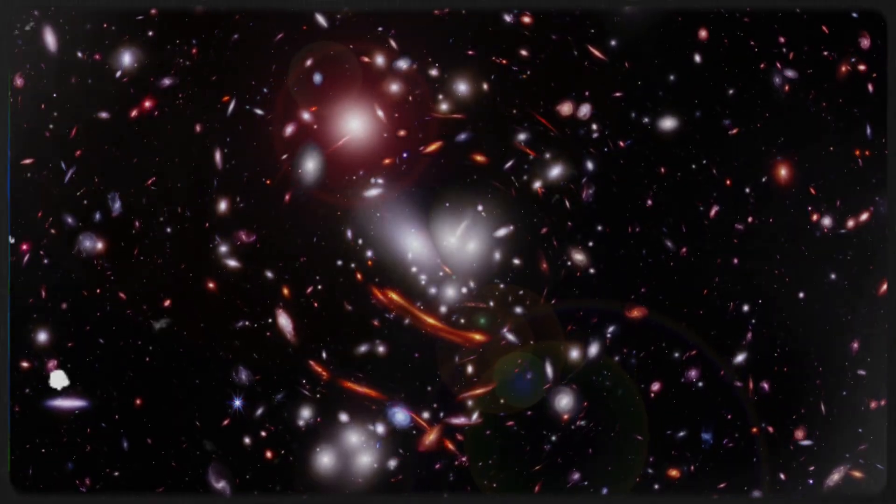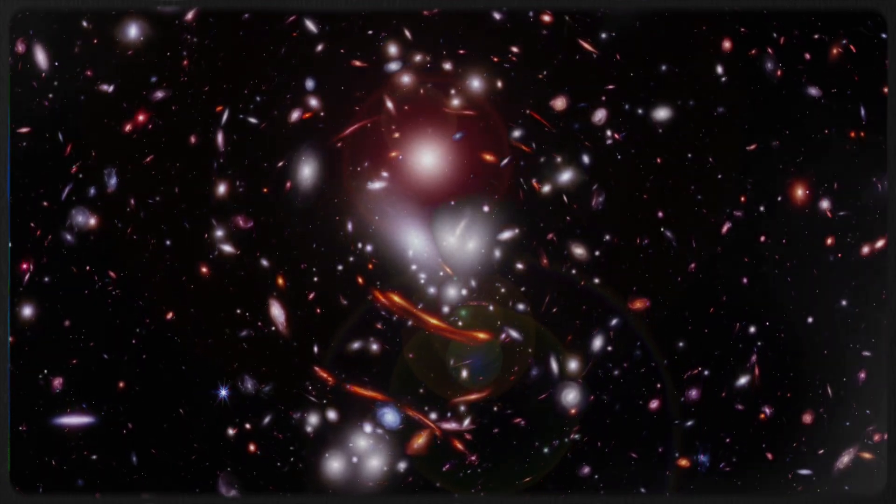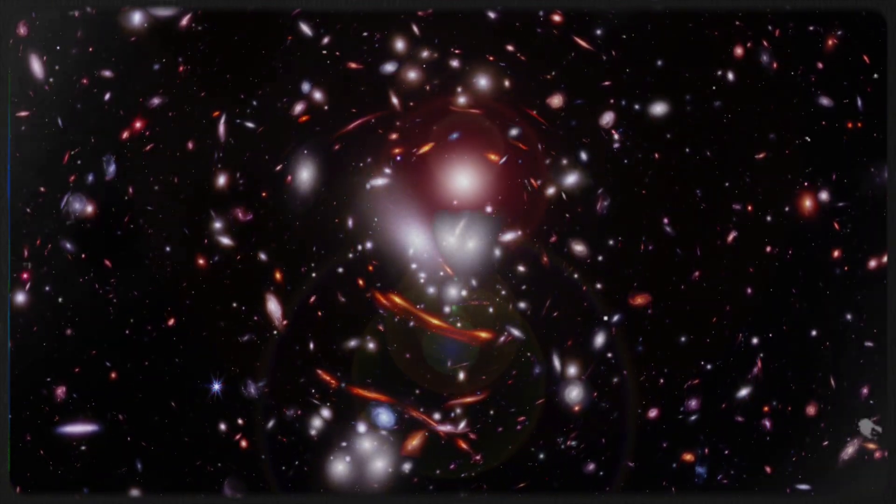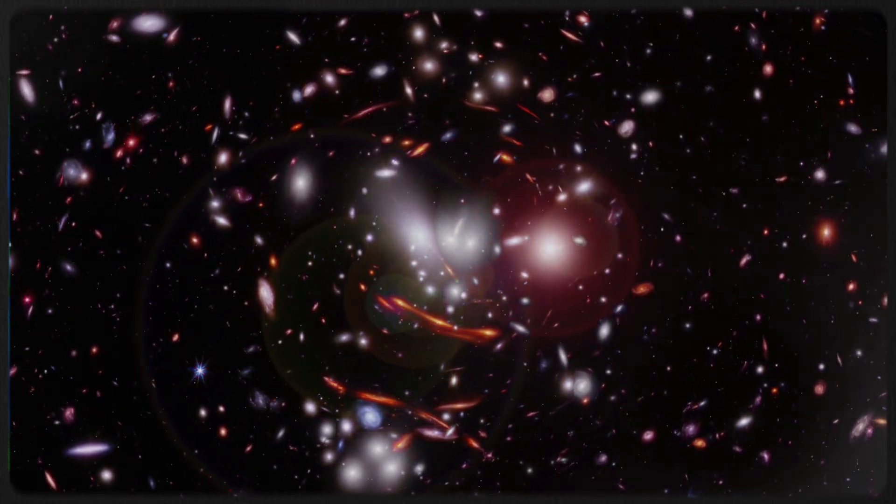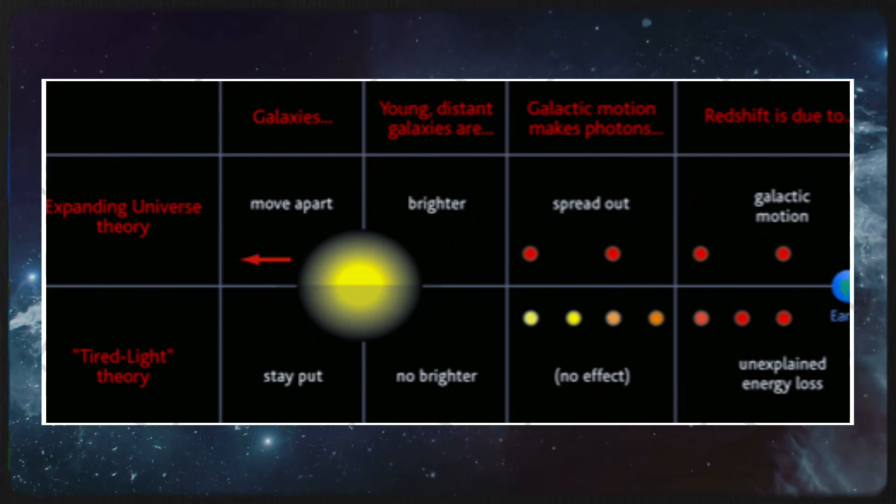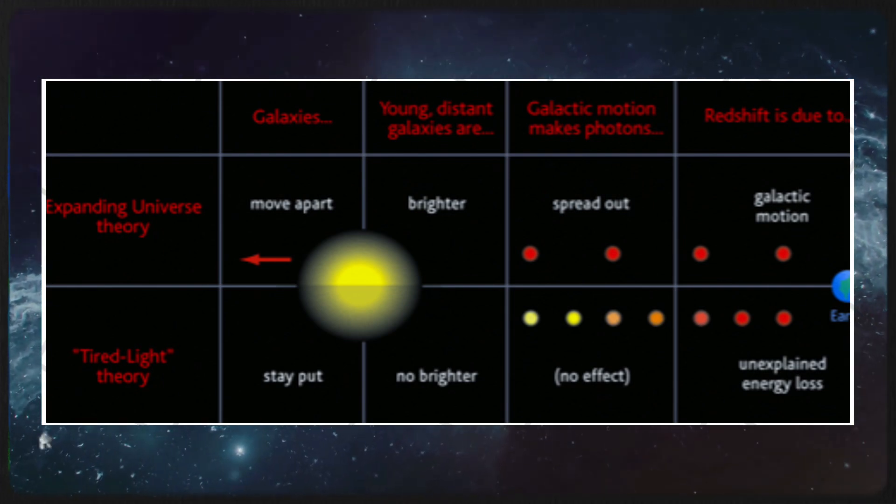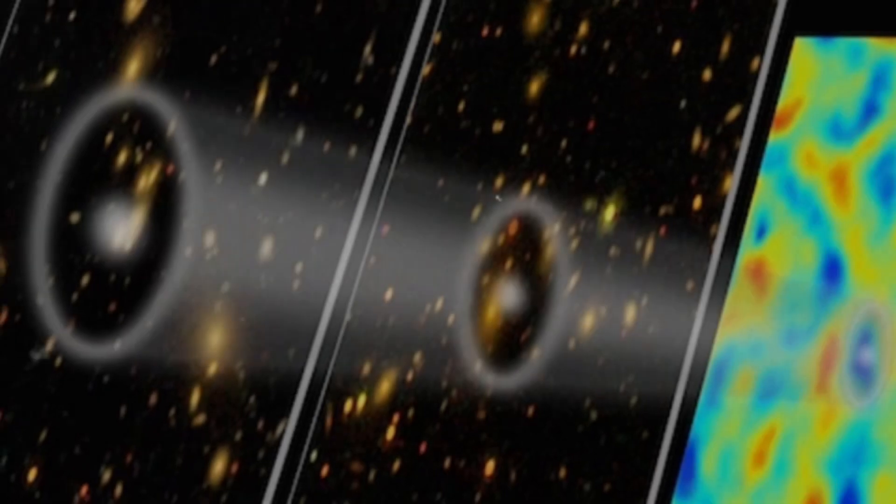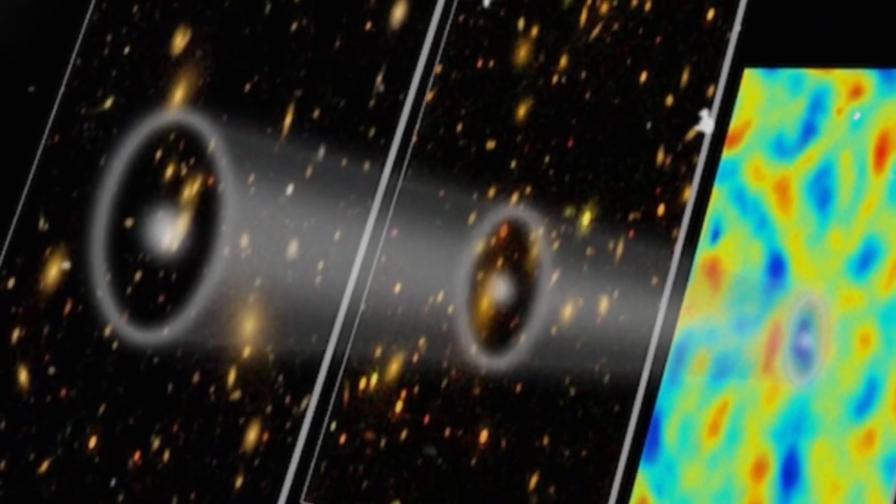Enter Professor Lior Shamir, who believes we might be misunderstanding how galaxies are actually moving. He proposes that what we see as expansion could be an illusion caused by a deeper, misunderstood phenomenon. One such alternative theory, tired light, suggests that as light travels across vast distances, it gradually loses energy. That loss makes it appear as if galaxies are racing away from us when maybe, just maybe, they're not.